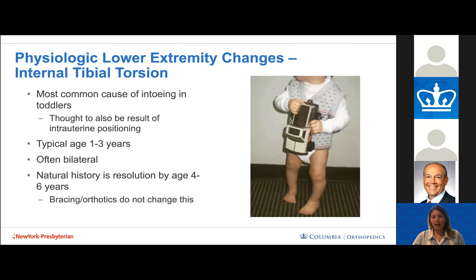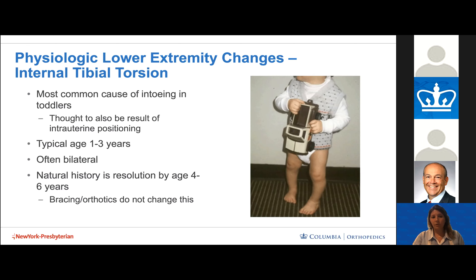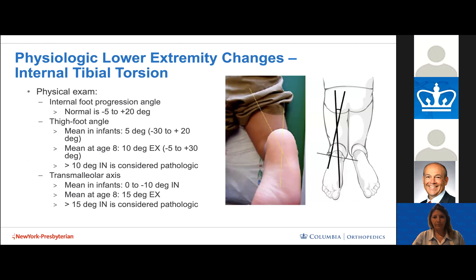Internal tibial torsion is the most common cause of in-toeing in toddlers, also due to intrauterine positioning, typically seen in children between ages one and three, and often bilateral. The natural history is resolution by age four to six. Importantly, bracing and orthotics do not affect the natural history of internal torsion — it will naturally improve as the child gets older.